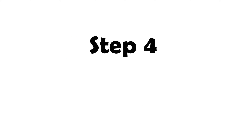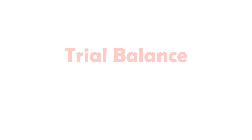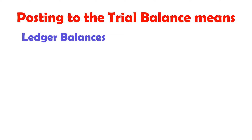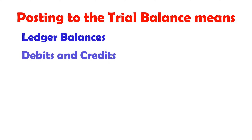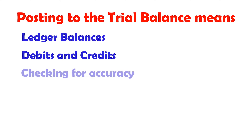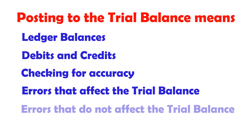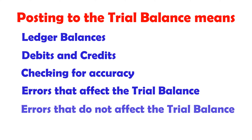Step 4 of the accounting cycle: trial balance. Posting to the trial balance means using ledger balances, debits and credits, and checking for accuracy. There are errors that affect the trial balance and errors that do not affect the trial balance.